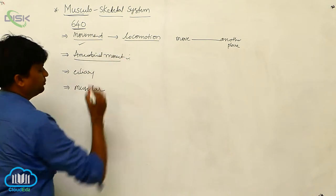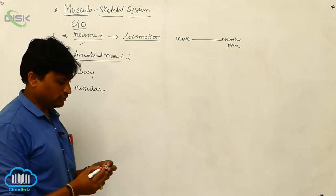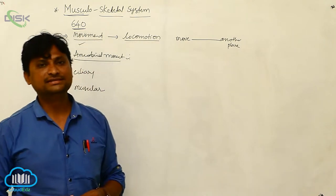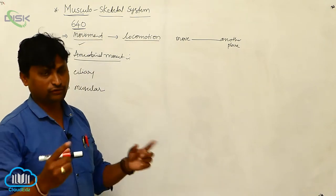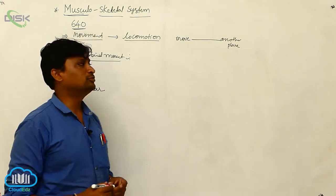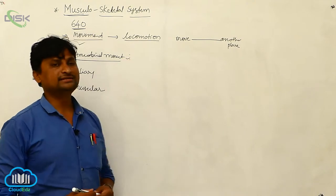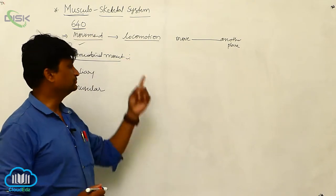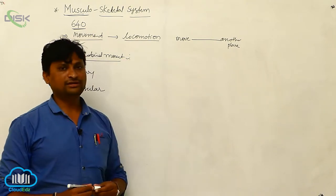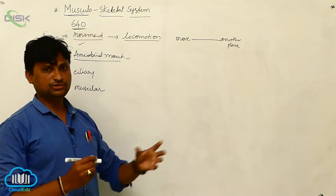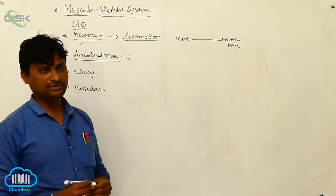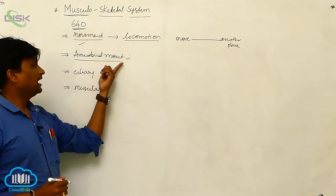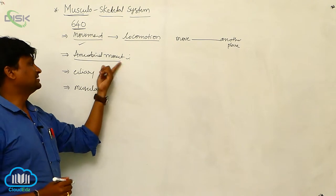First we go to amoeboid movement. Inside the body, macrophage cells and WBC cells show simple amoeboid movement. Along with some flagella, WBC cells also show some erectile movement.